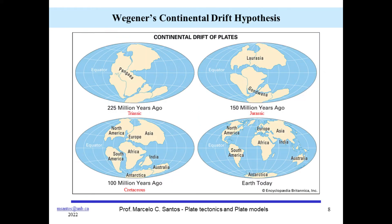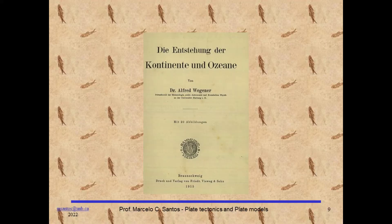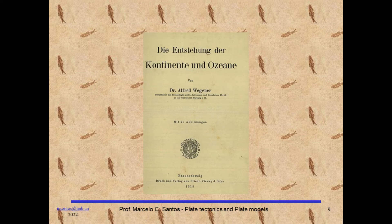In 1910, Wegener started to develop the idea that in the late Paleozoic era, which ended about 252 million years ago, all the present-day continents formed a single supercontinent, which had subsequently broken apart. Wegener called this ancient continent Pangea. His idea of continental drift was formulated in his major published work, The Origin of Continents and Oceans, in 1915. Wegener presented evidence that continents had drifted, but not on what caused them to move. The concept of continental drift should not be taken as synonymous with plate tectonics, even though plate tectonics encompasses the idea of continental drift and derives much of its impact from it.